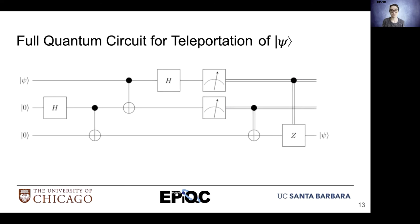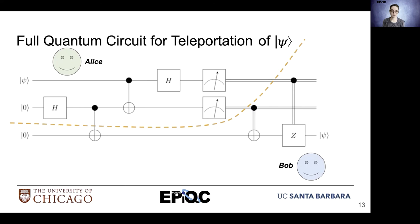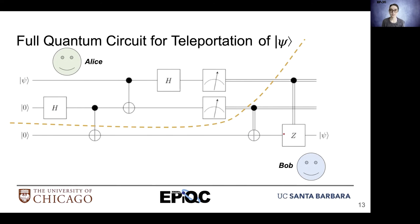Here we have the full quantum circuit for teleportation. If we divide it in half, we can see that Alice has the top part of the circuit while Bob has the bottom half. The double lines indicate classical information — that's why we have them after the measurement operation. We have classical information controlling Bob's qubit.